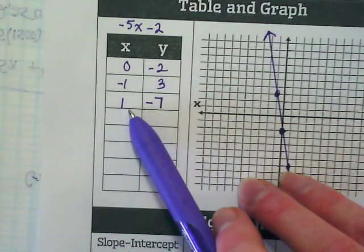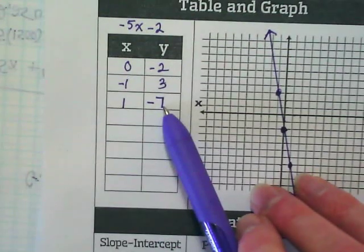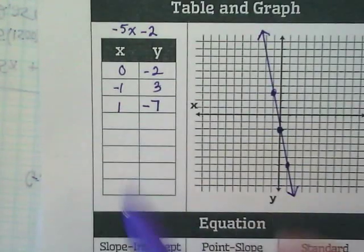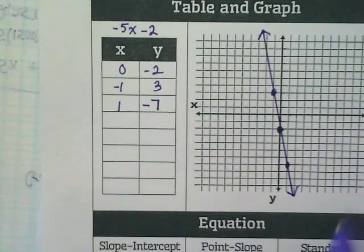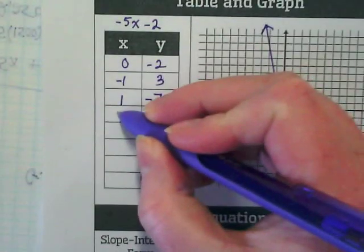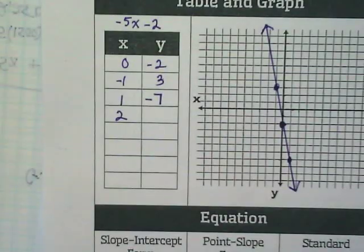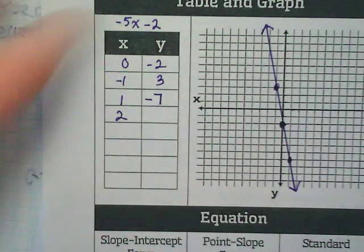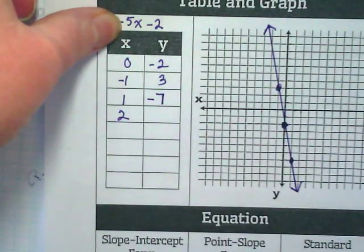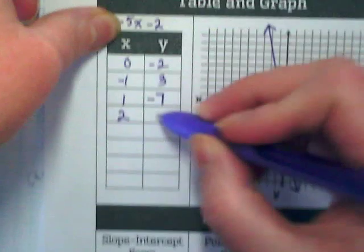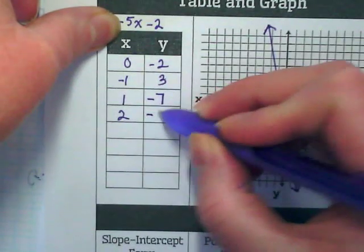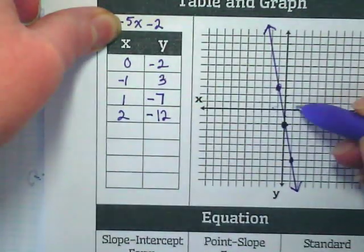Negative 5 times 1 minus 2 is negative 7. Can I find more points then? Let's put in 2. What is negative 5 times 2? Negative 10. Minus 2 is going to get me negative 12. Does that make sense with my line?